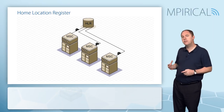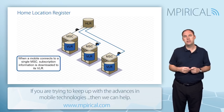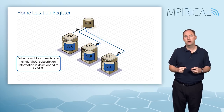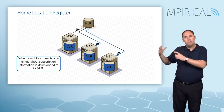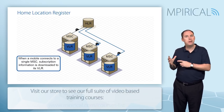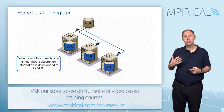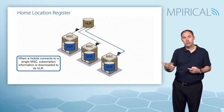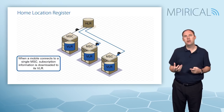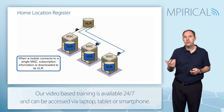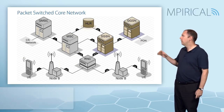When you switch on, you'll find yourself on one of these MSCs. Your profile is downloaded to the VLR — the Visitor Location Register. The key difference between an HLR and a VLR: the HLR is a store of all the subscribers on that service provider; a Visitor Location Register is a store of all subscribers visiting that location, whether from this service provider or roaming in.